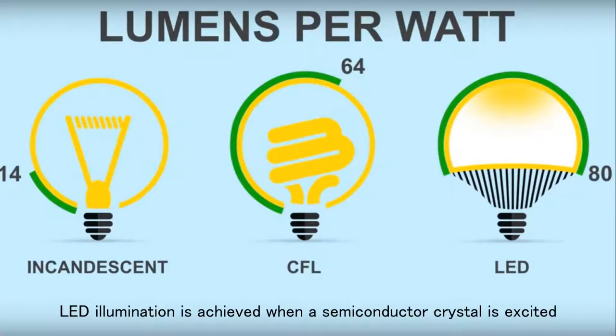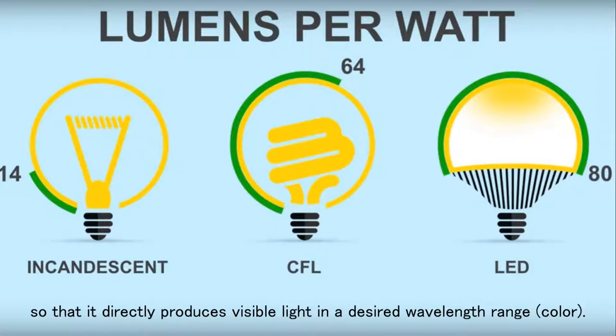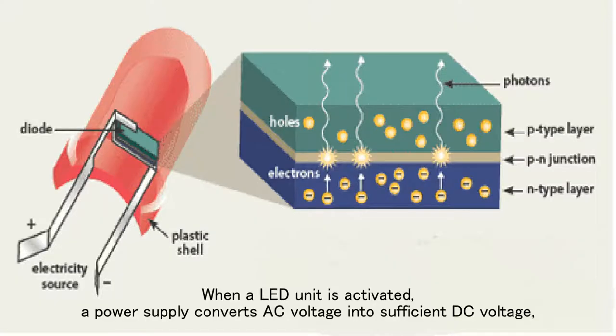LED illumination is achieved when the semiconductor crystal is excited so that it directly produces visible light in the desired wavelength range, which means color. When the LED unit is activated, a power supply converts AC voltage into sufficient DC